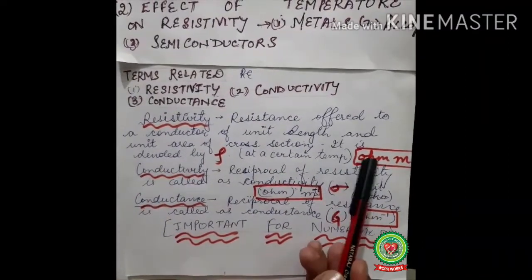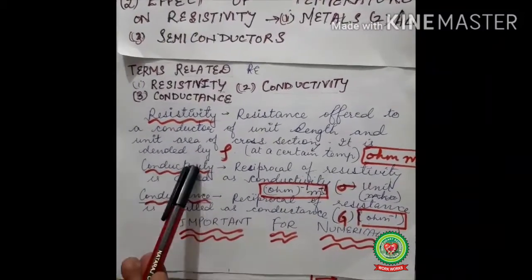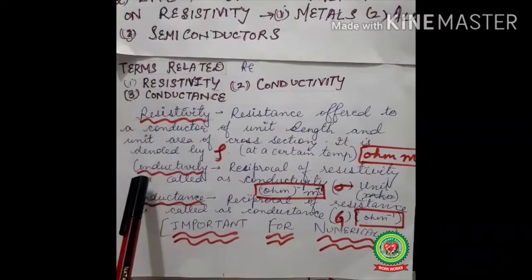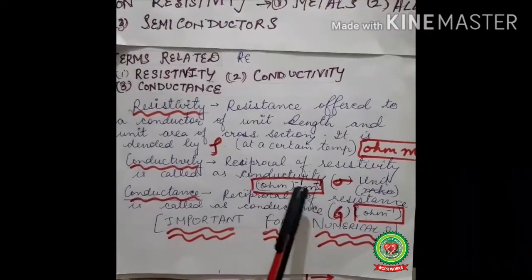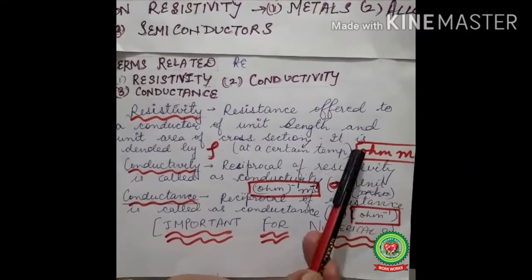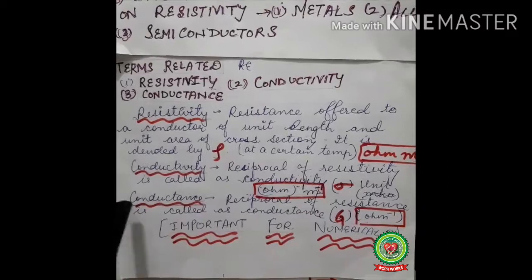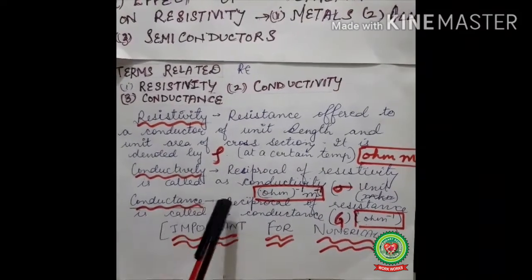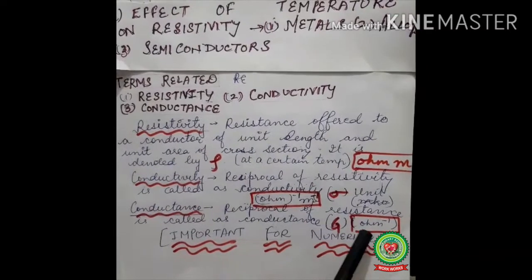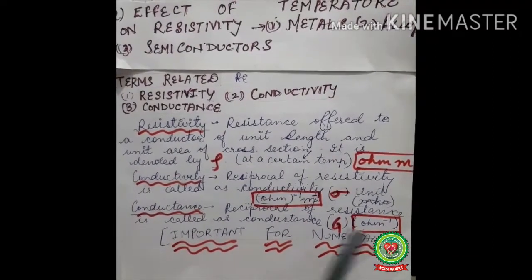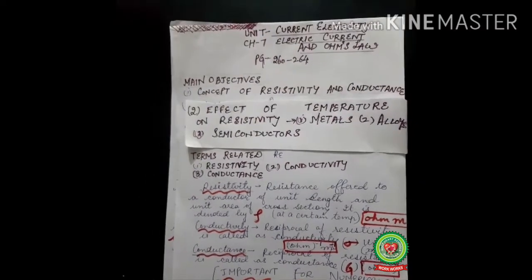The unit of resistivity is ohm-meter, and it is denoted by the symbol rho. Conductivity is the reciprocal of resistivity; its unit is ohm-inverse meter-inverse, and it is denoted by sigma. Conductance is the reciprocal of resistance, denoted by G, with a unit of ohm-inverse. Numericals related to these topics are very important.